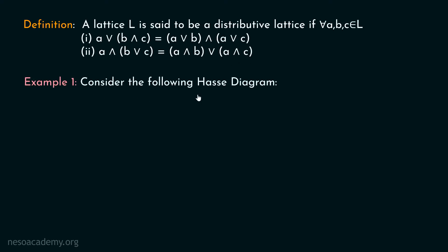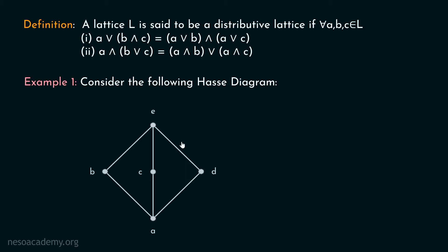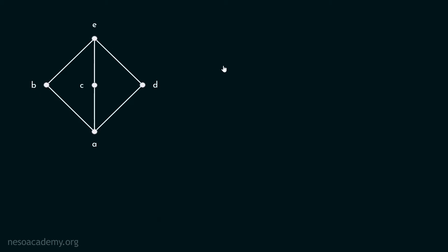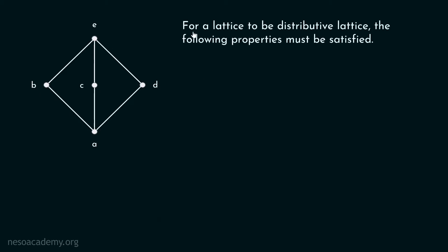Now let's see this example. Consider the following Hasse diagram. Our task is to identify whether this given lattice is a distributive lattice or not. For a lattice to be a distributive lattice, the following properties must be satisfied.